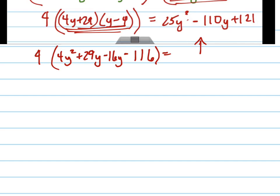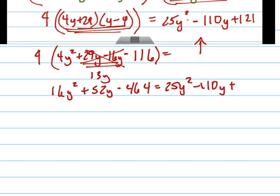Equals that mess that I have right there, I won't move it over. Now I take the 4 and I multiply it in. Well, let's add those together. 29 minus 16 is 13y, so that becomes 13y. Multiply the 4 in.